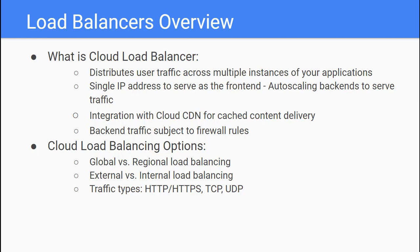Google provides the following cloud load balancing options: global load balancing for when your applications are available across the world, regional load balancing for when your applications are available in a single region, external load balancing for when your users reach your applications from the internet, and internal load balancing for when your clients are inside of Google Cloud. Cloud load balancing supports HTTP, HTTPS, TCP, and UDP traffic.